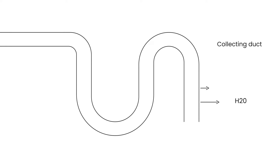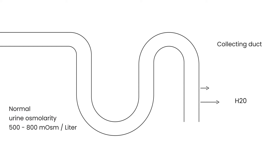The first number: what is the urine osmolarity normally? In a normal person, the urine osmolarity is about 500 to 800 milliosmoles per liter. Similarly, the normal serum osmolarity is about 285 to 295 milliosmoles per liter.